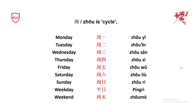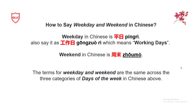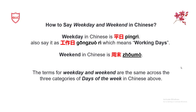Now, how to say 'weekday' in Chinese? It is Ping Ri, and you can also say Gong Zuo Ri, which means 'working days.' For 'weekend' in Chinese, the word is Zhou Mo. The terms for weekday and weekend are the same across all three systems — Xing Qi, Li Bai, and Zhou.